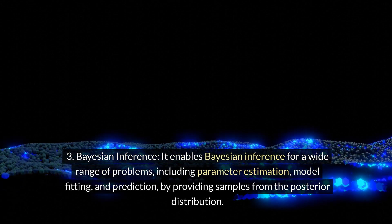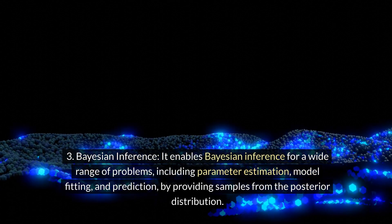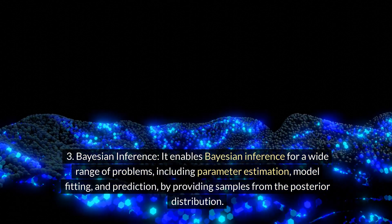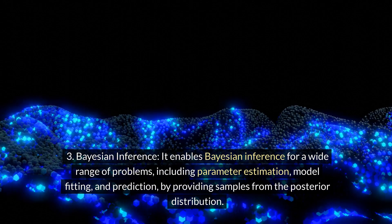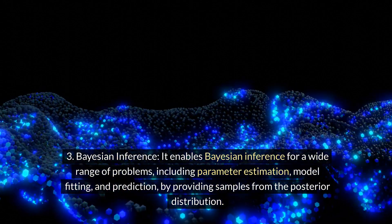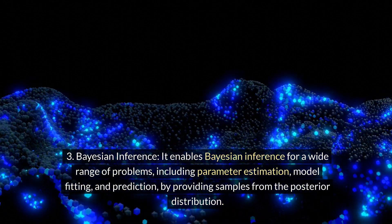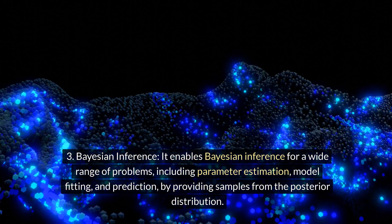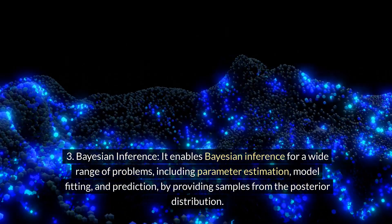Bayesian inference: Gibbs sampling enables Bayesian inference for a wide range of problems, including parameter estimation, model fitting, and prediction, by providing samples from the posterior distribution.